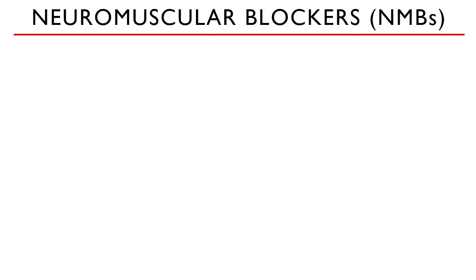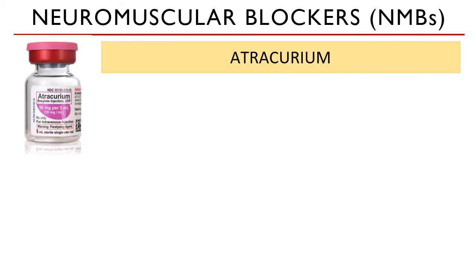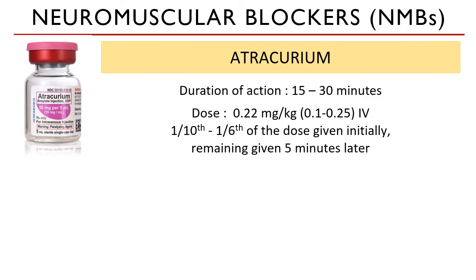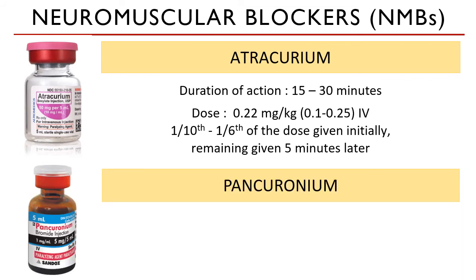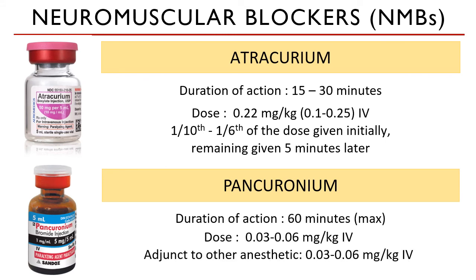Examples of neuromuscular blockers include atracurium, which has a duration of action of 15 to 30 minutes. It is given at a fraction of the dose first to assess the animal's respiratory function, and the remaining dose is given 5 minutes later. Another NMB is pancuronium, which has a longer duration of action of up to 60 minutes. This drug has a selective cardiac vagal blockade, causing a temporary increase in heart rate after it is administered.